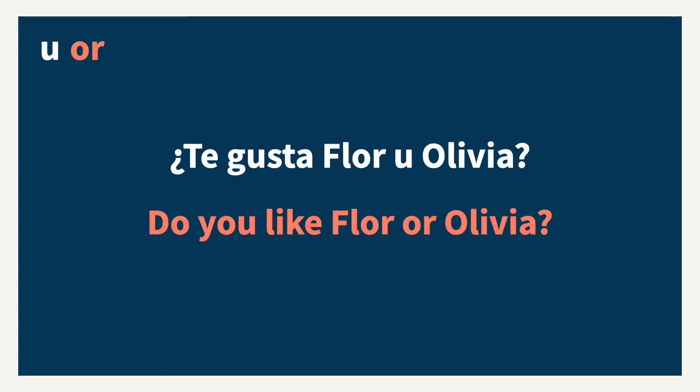U as a conjunction also means 'or,' and we use it in place of O when the word following the conjunction starts with the letter O. For example, ¿te gusta Flor u Olivia? Do you like Flor or Olivia?